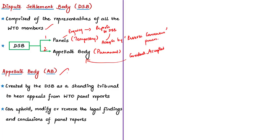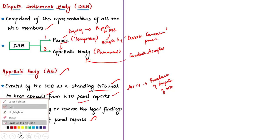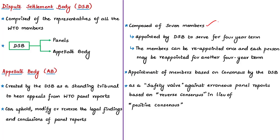The appellate body was created by the dispute settlement body as a standing tribunal to hear appeals from WTO panel reports. It was established in 1995 under Article 17 of the Understanding on Rules and Procedures Governing the Settlement of Disputes of WTO. The appellate body can uphold, modify, or reverse the legal findings and conclusions of panel reports, making it the main part of WTO's dispute settlement mechanism. It is composed of seven members appointed by the dispute settlement body for four-year terms, reappointable once. Appointment is based on consensus — if one WTO member disagrees, the appointment may not be possible.